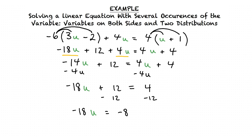And now our final step will be to divide both sides by negative 18. So u equals negative 8 divided by negative 18. We're not done yet though because we can still simplify our answer further.